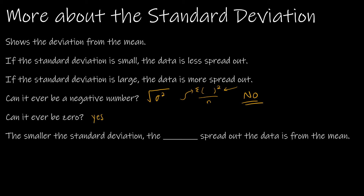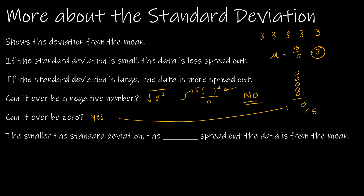Can the standard deviation be zero? Yes, but only in one special case. If all five values were, say, 3, the mean would be 3, and each deviation would be zero. Adding up zeros and dividing by five gives zero, and the square root of zero is zero. So the standard deviation can be zero, but only if all of the data values are exactly the same. The smaller the standard deviation, the less spread out the data is from the mean.